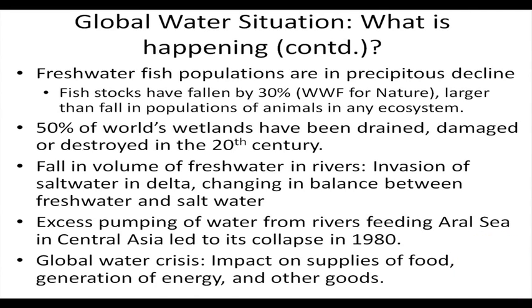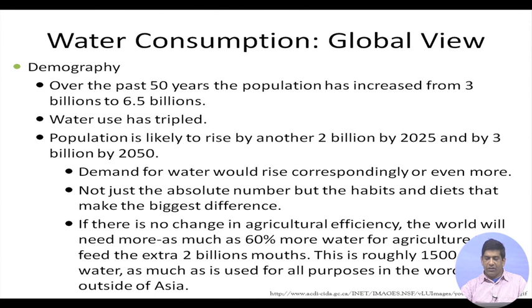We have the global water crisis impacting supplies of food, generation of energy, and other goods. In terms of global demographics, over the past 50 years the population has increased from 3 billion to 6.5 billion — now more than 7 billion — and our water use has tripled. We have the chance of population rising by another 2 billion: by 2025 we may be around 8.5 billion, and by 2050 close to 10 billion people. That will mean more and more water demand, but not just the absolute numbers — the habits and diets make the biggest difference too. If population moves towards a non-vegetarian diet with more meat, our water footprint goes up significantly.